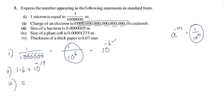That is 5 into 10 raised to negative. The decimal point is negative. We have 4 digits: 1, 2, 3, 4, 5, 6, 7 — so the answer is 10 raised to negative 7. This is the fourth question.